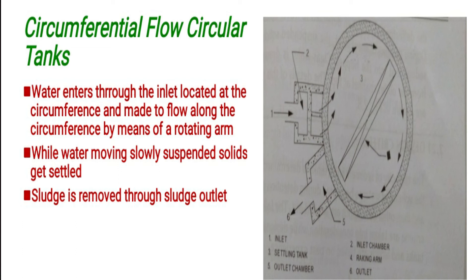Water enters through the inlet located at the circumference and is made to flow along the circumference by means of a rotating arm. While water is moving slowly, suspended solids get settled.